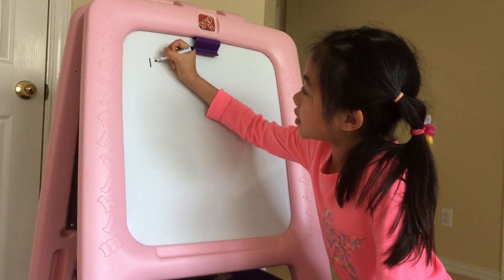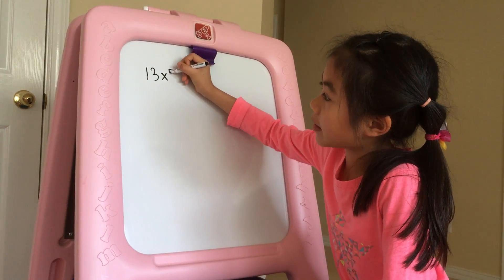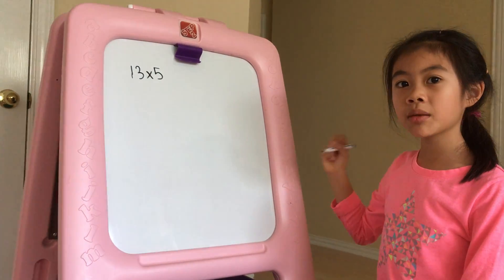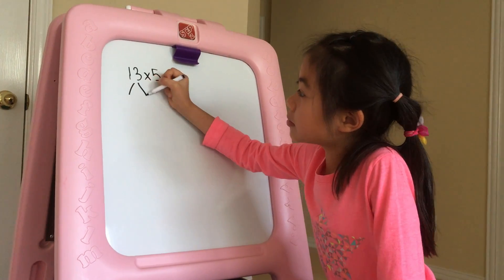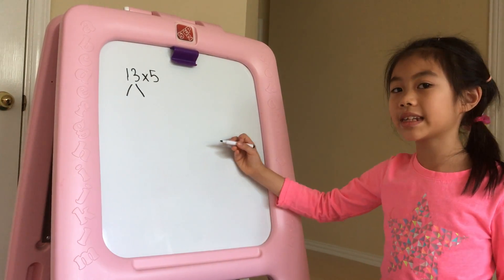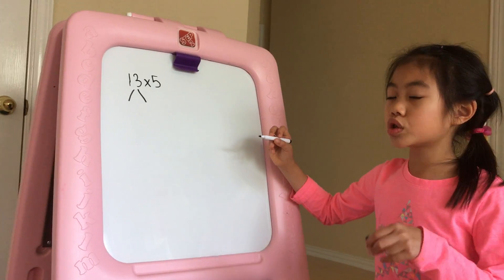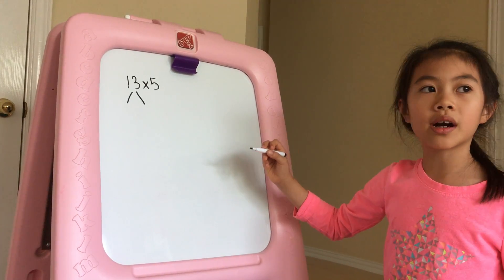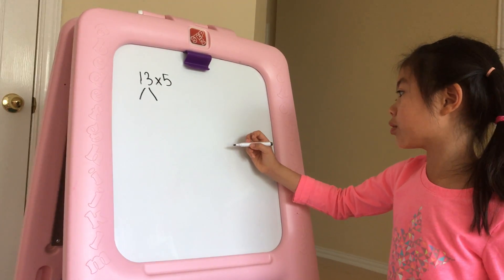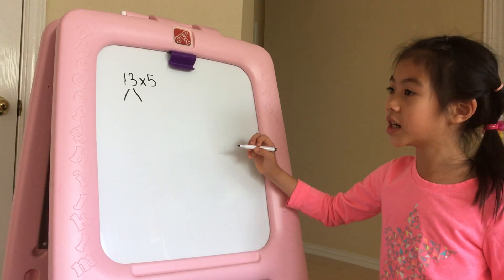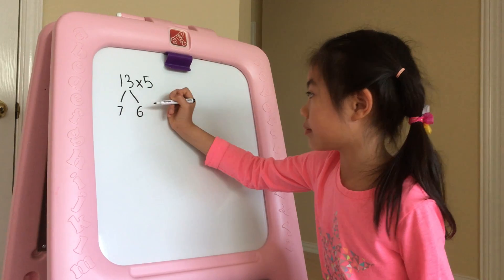Like 13 times 5. So, you take the bigger number, which is 13, and partition it into two equal or very close to equal groups. Since 13 can't be equal and it can't be half, so it has to be 7 and 6, which make 13, right?